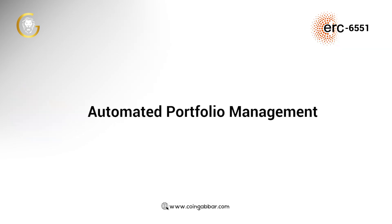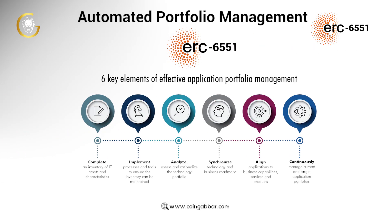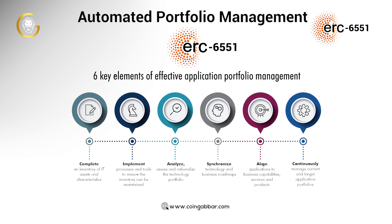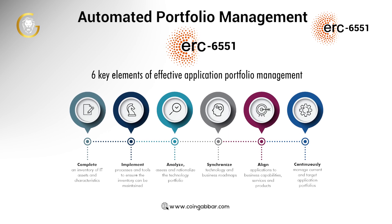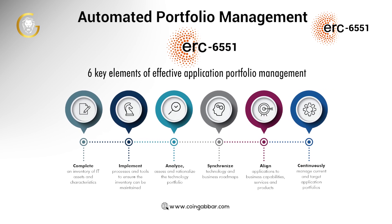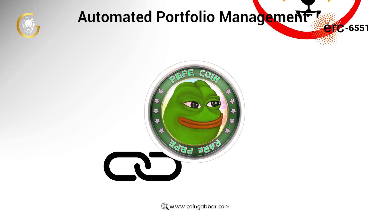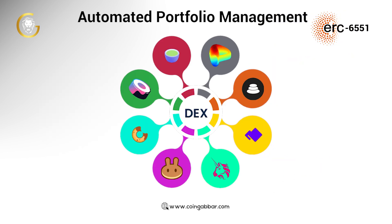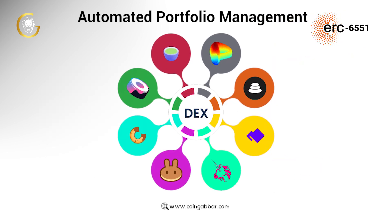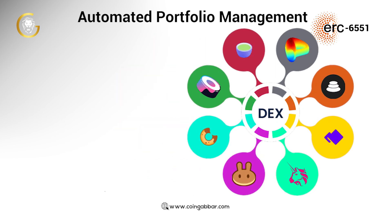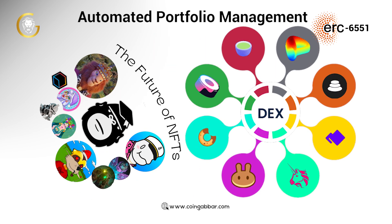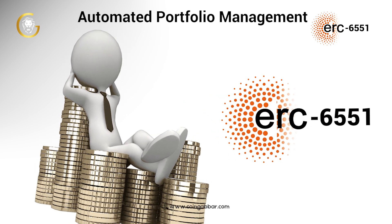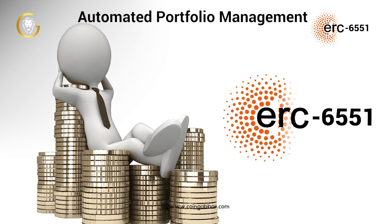Automated Portfolio Management. ERC-6551 token-bound accounts open new possibilities for automated portfolio management. By binding token balances to specific accounts, decentralized investment platforms can autonomously manage users' assets based on predefined parameters, providing an efficient and hands-off investment experience.